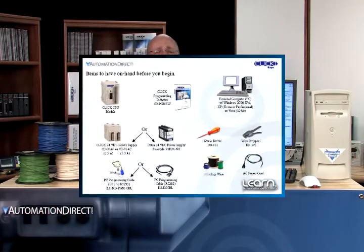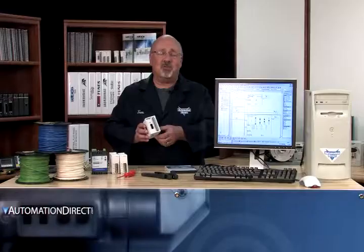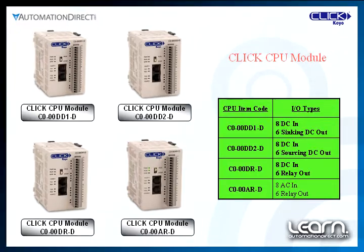Before you begin with the other steps in this series, we recommend you have the following items on hand to allow arriving at the final Getting Started task a little quicker. Any one of the current four different IO-type configurations available will work fine for this Getting Started series.